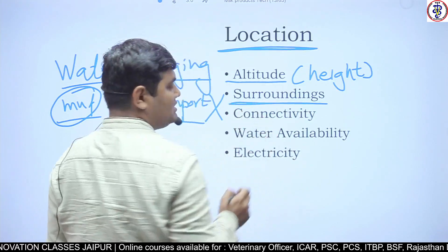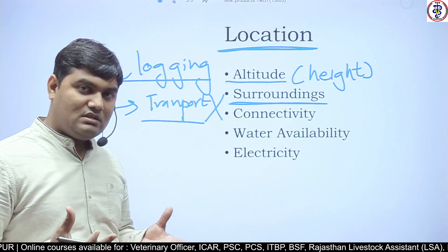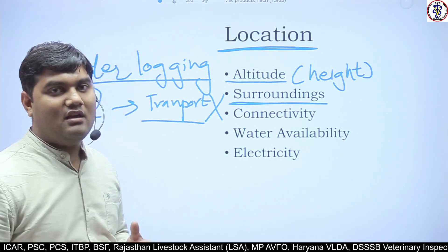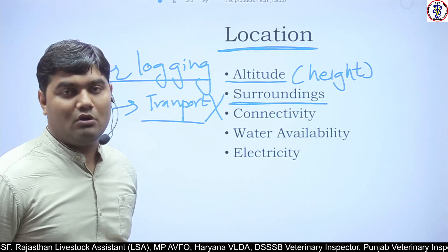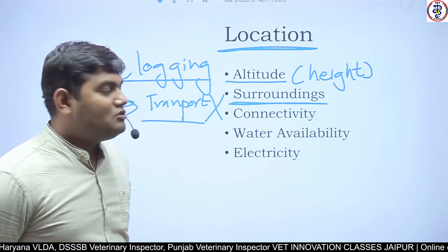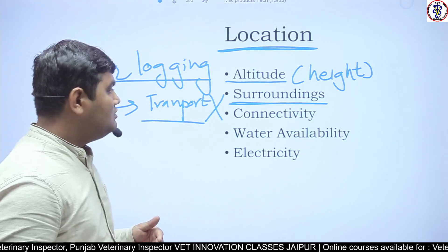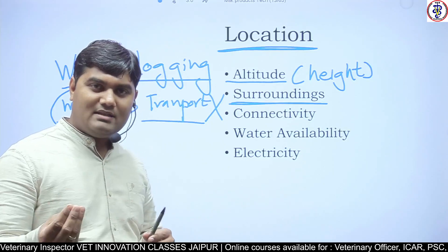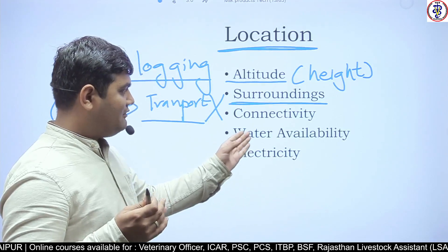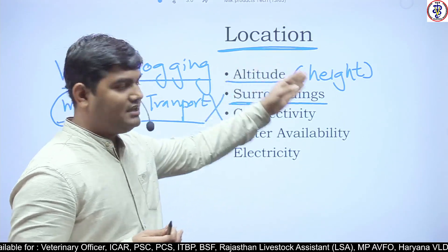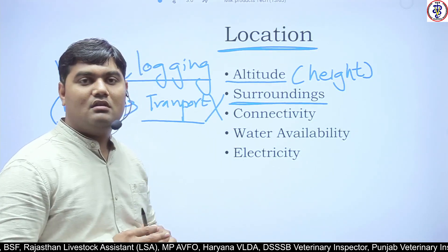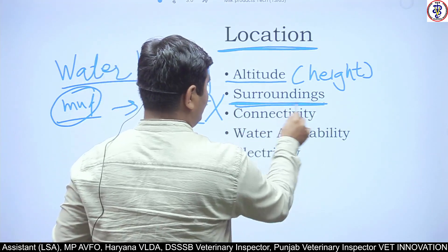Another important factor is surroundings. The plant should not be too close to the city area because land costs a lot and traffic causes disturbance. However, it should be moderately accessible, with basic facilities like cooling, electricity, water availability, and connectivity available in the nearby area. Surroundings play a very important role.